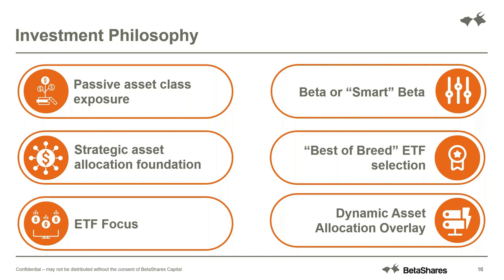Some of those ETFs, although index-tracking, are also smart beta — they track an index, but not just a market cap index. There are some strategies where the history demonstrates they can beat market cap indices over time, and where we see that opportunity we've added those into the models. A very distinguishing point of our philosophy is best-of-breed ETF selection — you'll see in the models it's not just BetaShares ETFs. Where other providers offer better value for a particular plain vanilla exposure, we are open to using them.